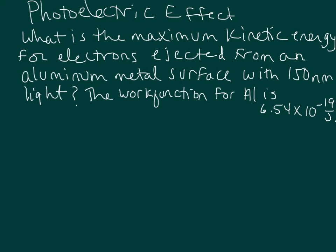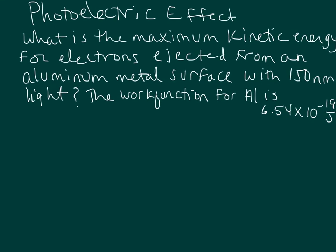As we begin, let's go ahead and remind ourselves of a few equations. One of the equations we're going to be looking at is the equation that relates the kinetic energy of the ejected electron — it is equal to the energy of the photon minus the work function for the metal. As long as the energy of the photon is high enough to overcome this work function, then an electron will be ejected with some kinetic energy.